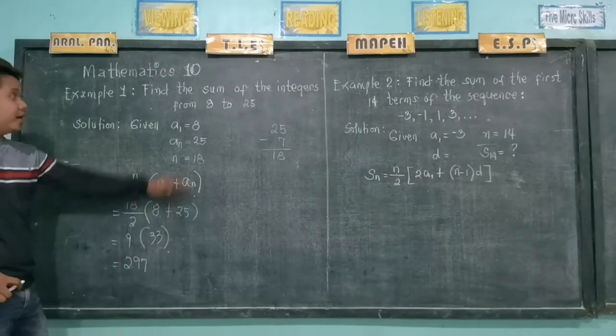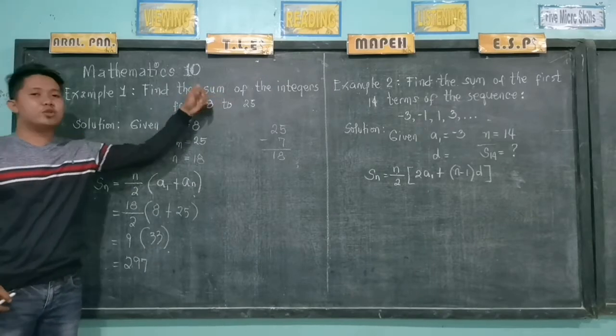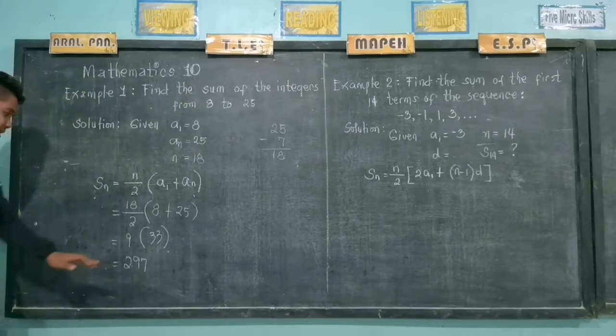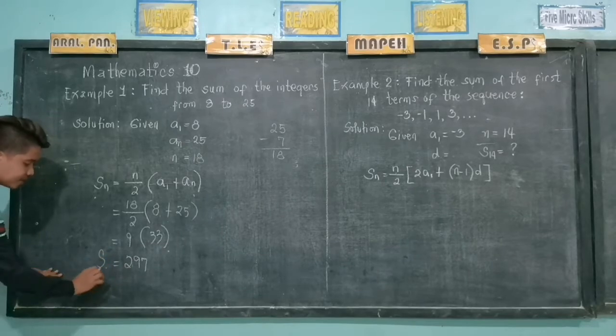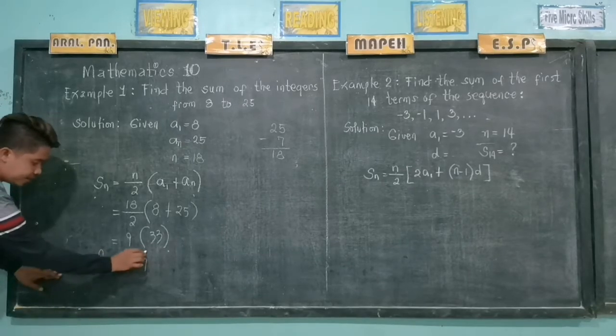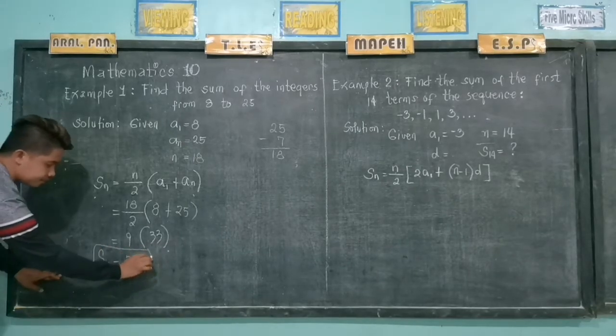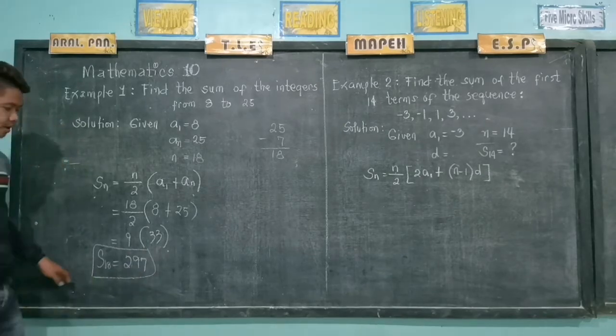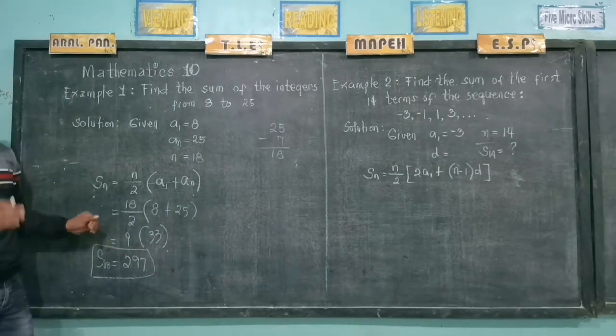Now, the sum of the integers from 8 to 25 is 297. This is S sub 18. Did you follow?